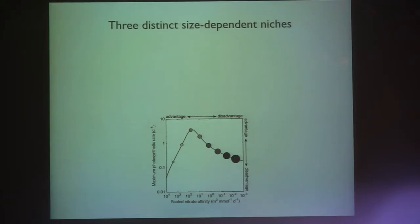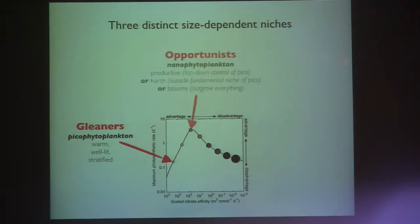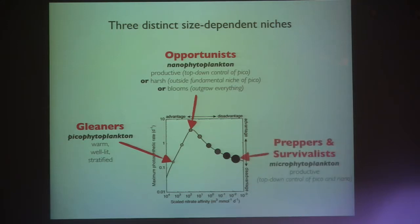We can identify three approximate niches: the familiar gleaners — high affinity, low growth rate; the opportunists that grow in blooms or in environments with high nutrient supply; and the large ones, which I'll call preppers or survivalists — they're either storing nutrients or avoiding attack by grazers. They've got very slow growth rates, but come the post-bloom apocalypse, they'll be the ones that end up surviving.